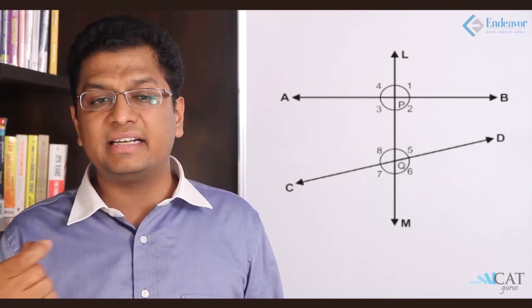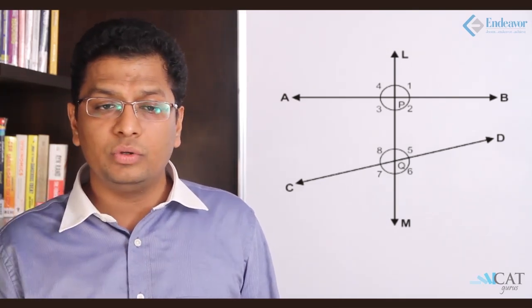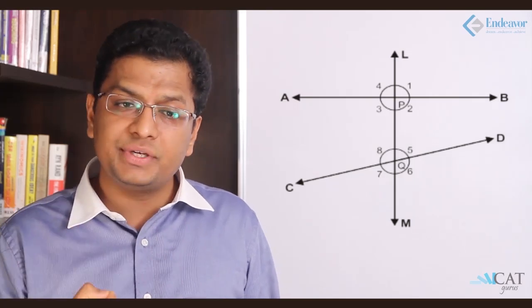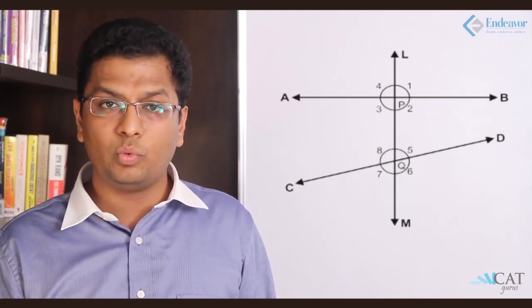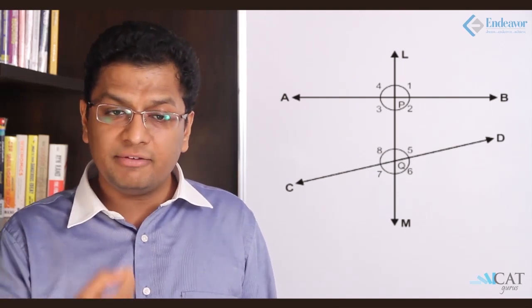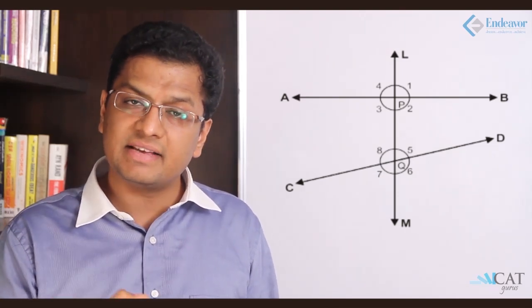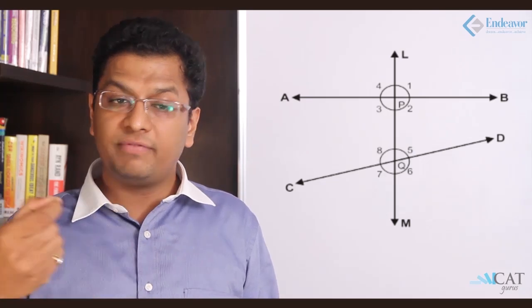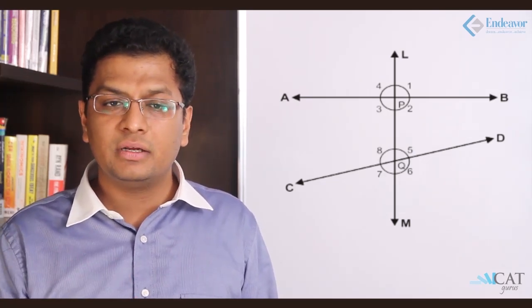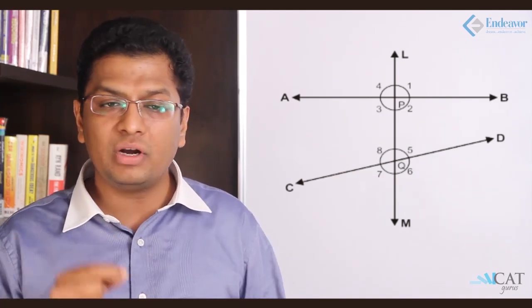What is an adjacent angle? Any angle which is next to another. So angle 1 and 2 are adjacent, 1 and 4 are adjacent, but 1 and 3 are not. Similarly, 2 and 3, 5 and 6, 7 and 8, 6 and 7, 5 and 8 are adjacent pairs, but 5 and 7 are not. Any two angles next to each other are called adjacent angles.